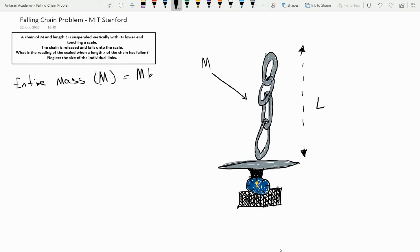I have an illustration here which shows the extended chain and then as it falls and crumples onto the pan the weight measured by the pan builds up.